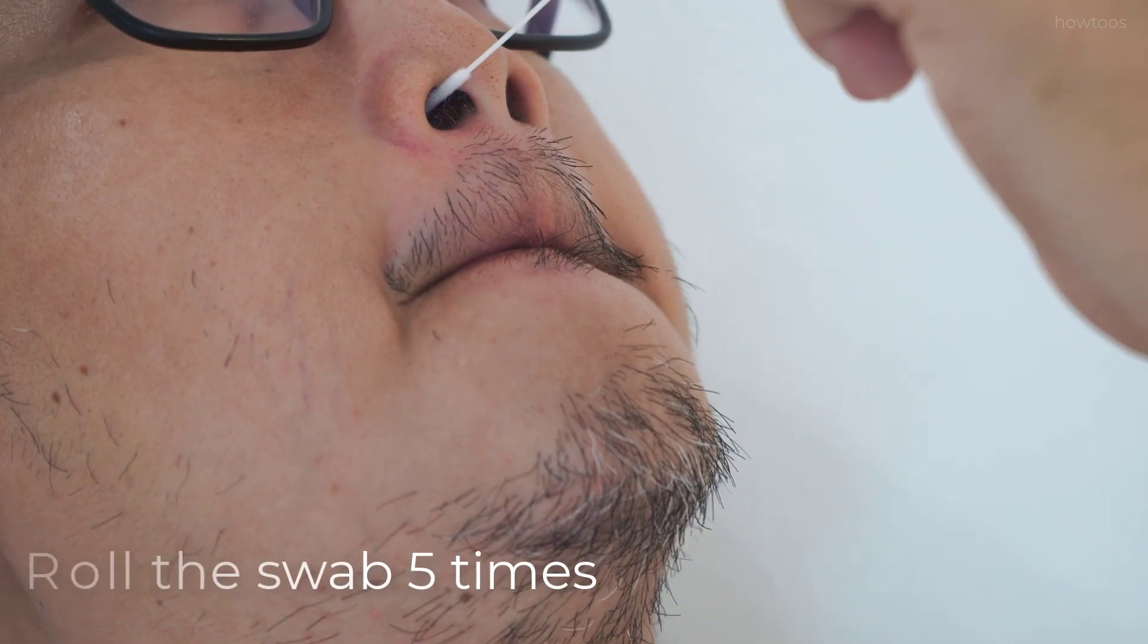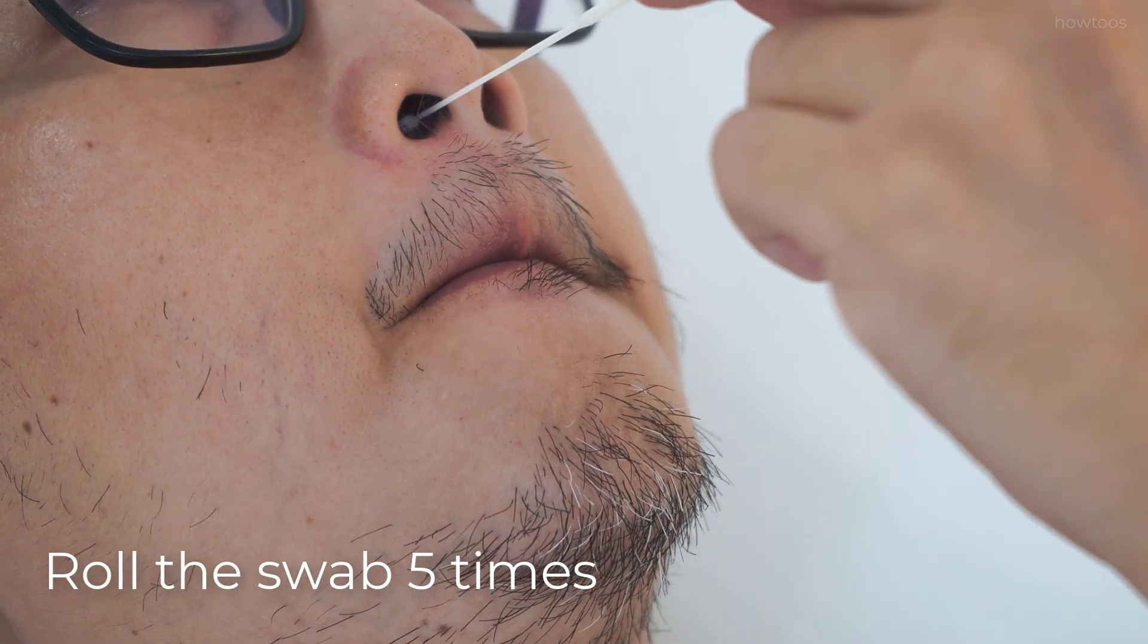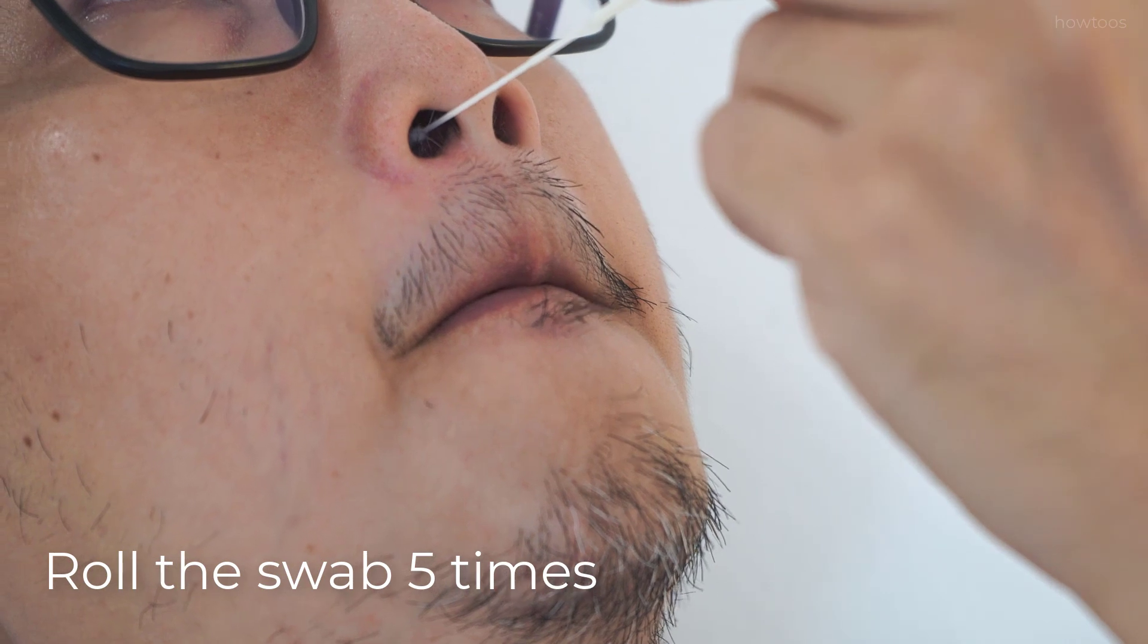Tilt your head back lightly for around 70 degrees. Insert the swab until you've reached the posterior wall of the nasopharynx and gently rub and roll the swab for around five times. Slowly pull out the swab while rotating it.